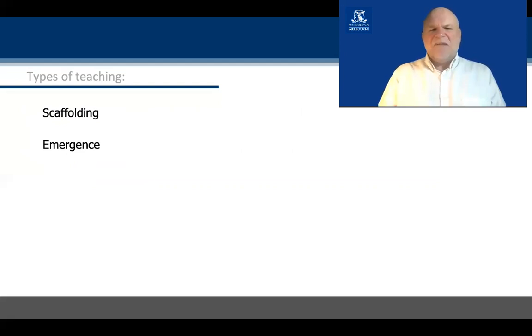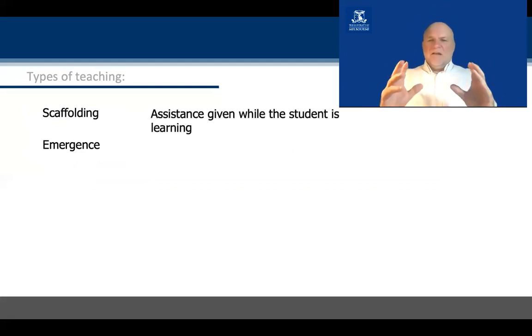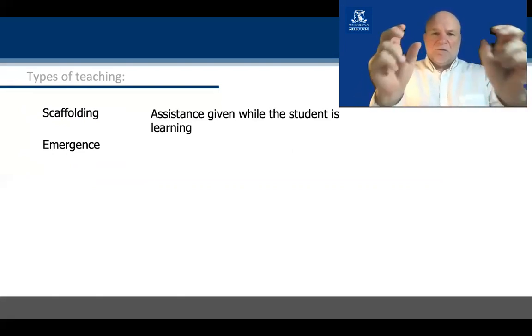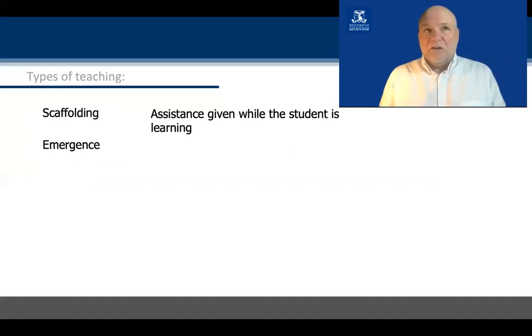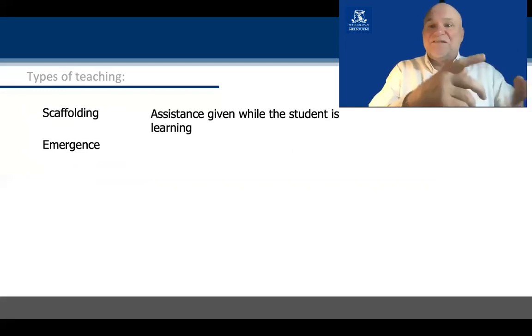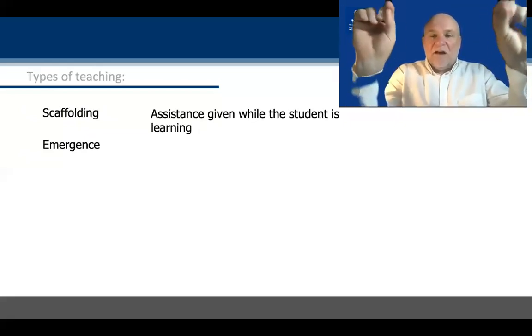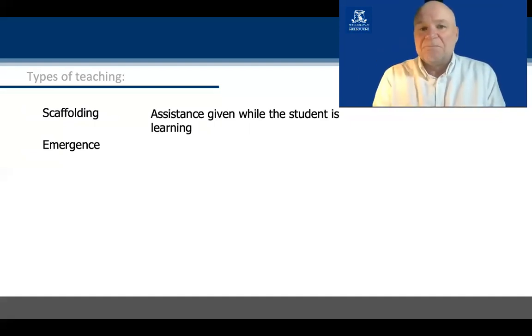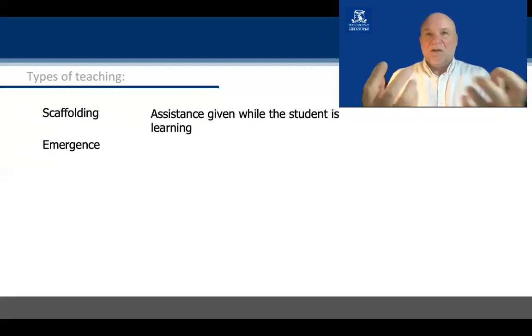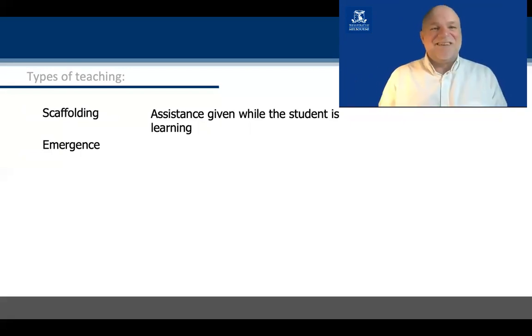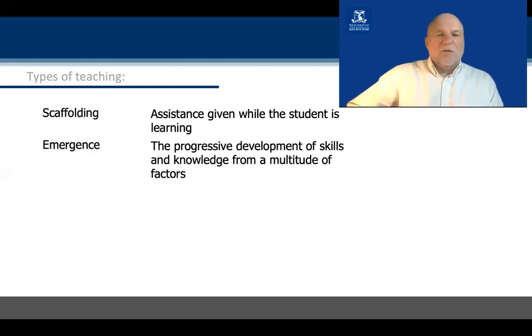Two words that will come up: scaffolding and emergence. Scaffolding is the idea that as we teach something we give lots of help to the students so they learn it along the way. For example, if we're teaching interpreting, we'll start off by going with a very slow text. It's like building a building and you put the scaffolding around the outside. Once the building is in place you take the scaffolding away. So once we get the skills across to the students, we take away the learning supports and give the speeches in real time at a professional level.